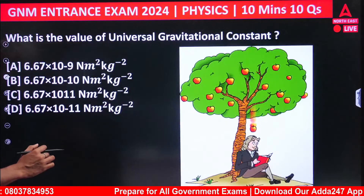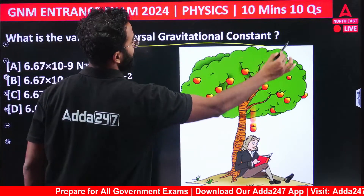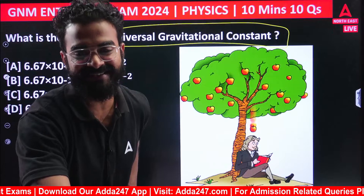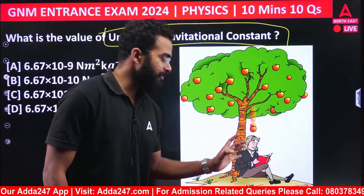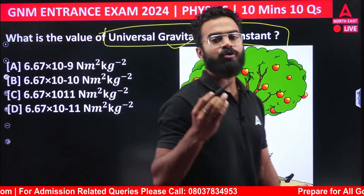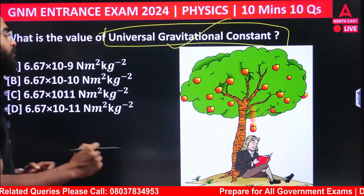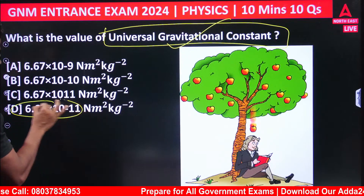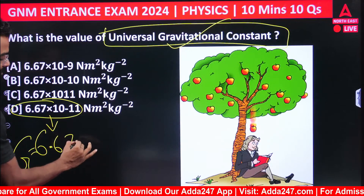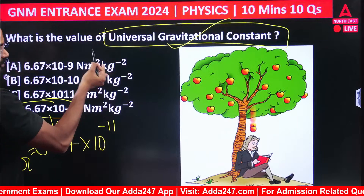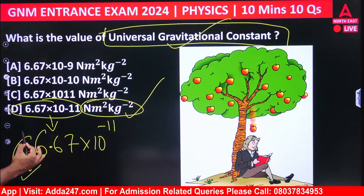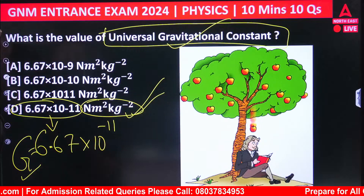Moving forward: what is the value of the universal gravitational constant? It was discovered by Sir Isaac Newton, not Albert Einstein. The value is G = 6.67 × 10⁻¹¹ Newton meter square per kg square. Option D will be the correct answer.